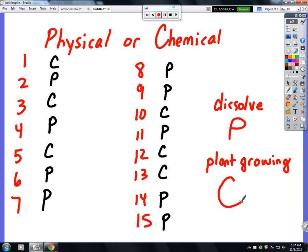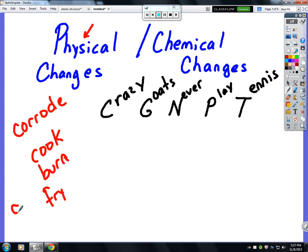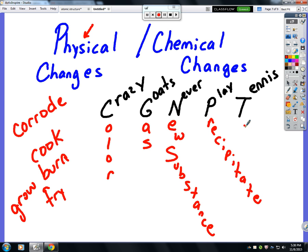With chemical changes you need to know a sentence: Crazy Goats Never Play Tennis. There's words like cook, burn, fry, corrode, and grow - not dissolve, remember dissolve is physical - those are all chemical changes. But if you have a Color change, a Gas, a New substance, a Precipitate, or a Temperature change, those are all signals of a chemical change.